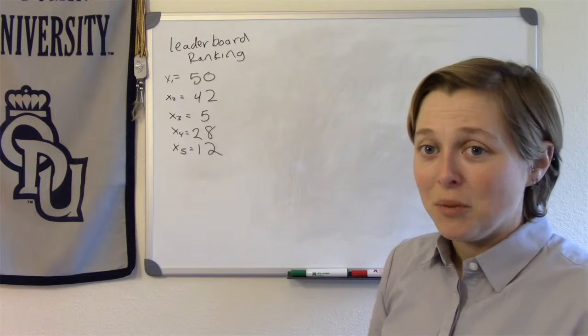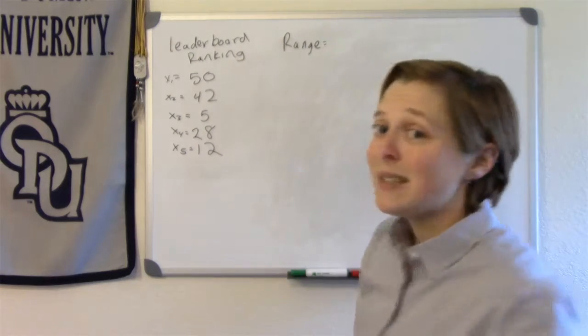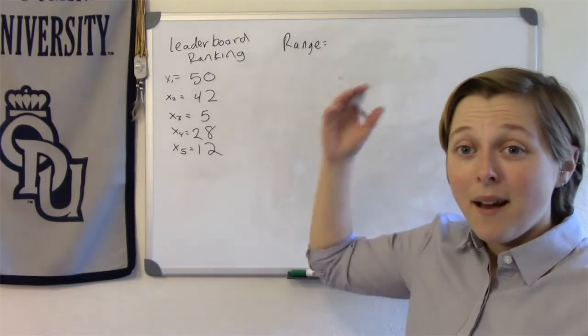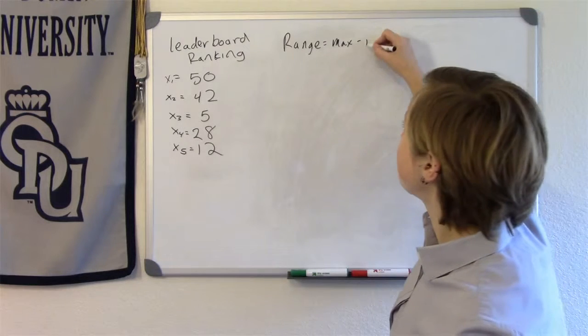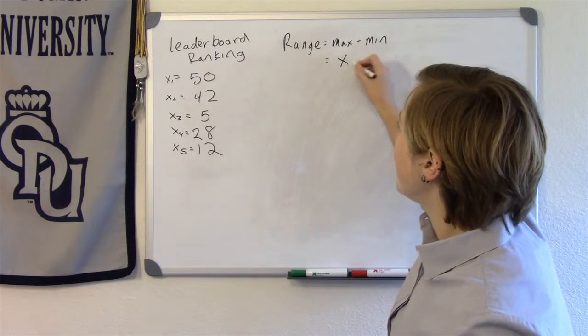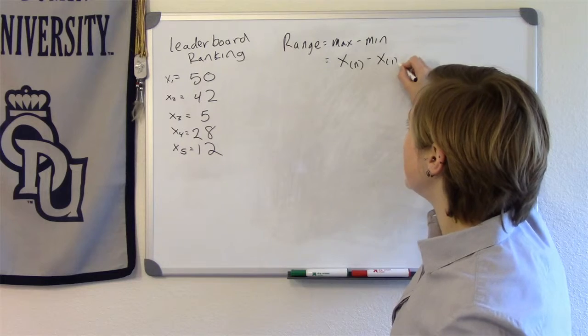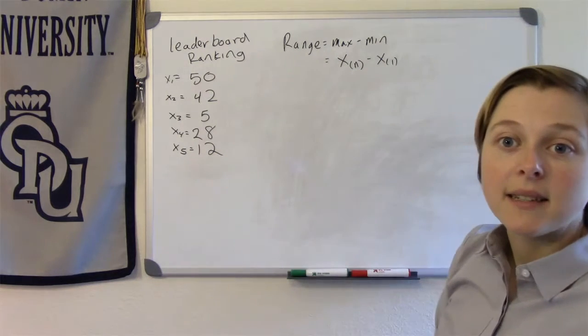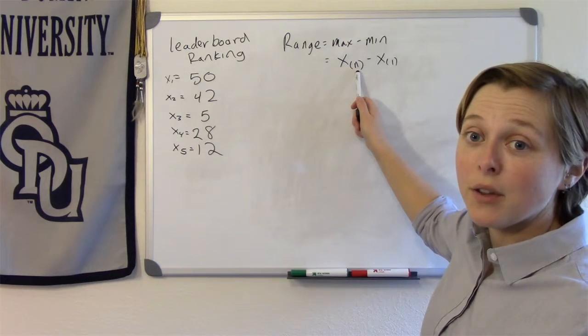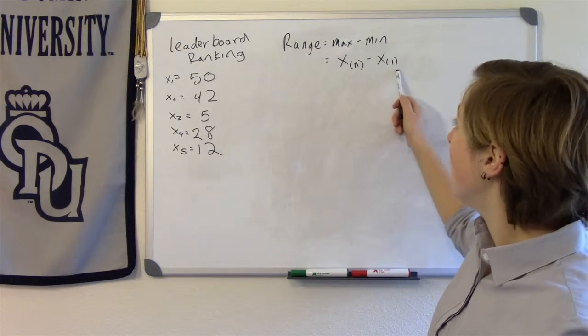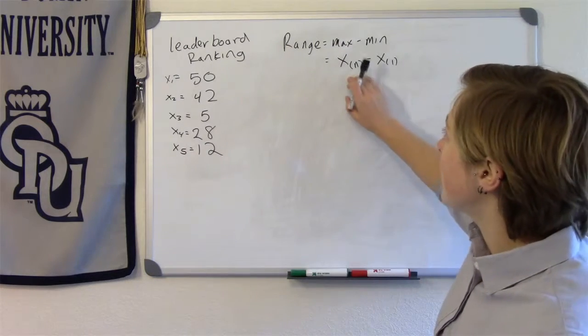Now the easiest measure of variation that we can start with is the range. So what is the range? It's the highest value, the max, minus the lowest value, the min. Using our notation, this would be x(n) minus x(1). What do those parentheses mean? That means that that's the ranked data. So n would be the highest value of the data set when the data is ranked, and 1 would be the first observation of the ranked data.